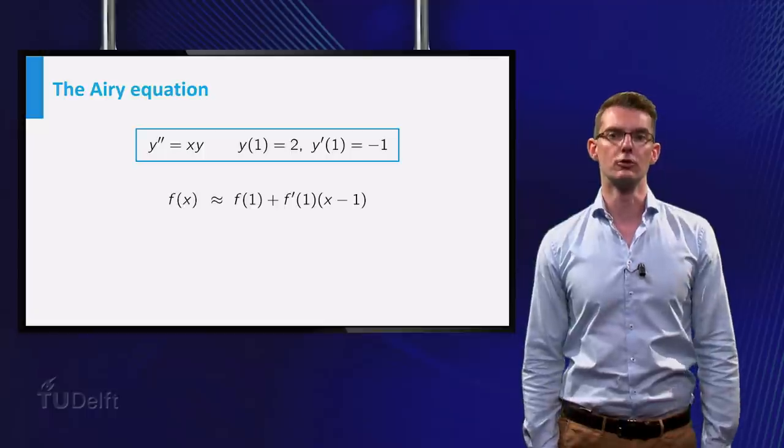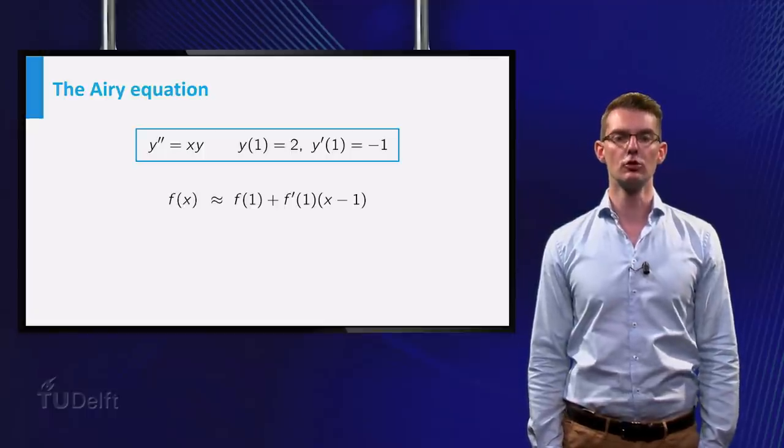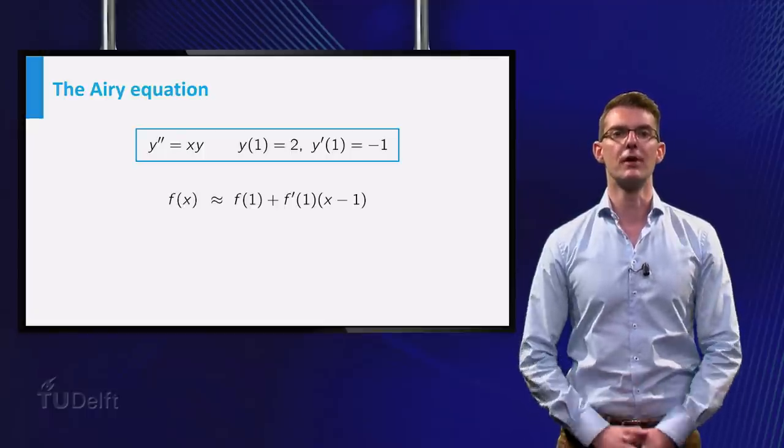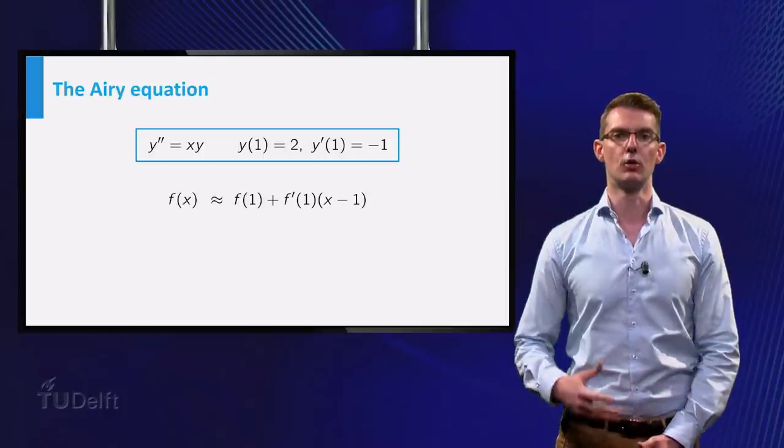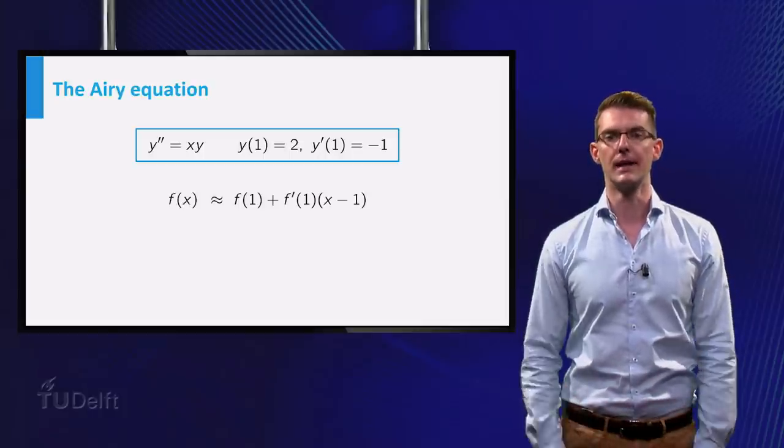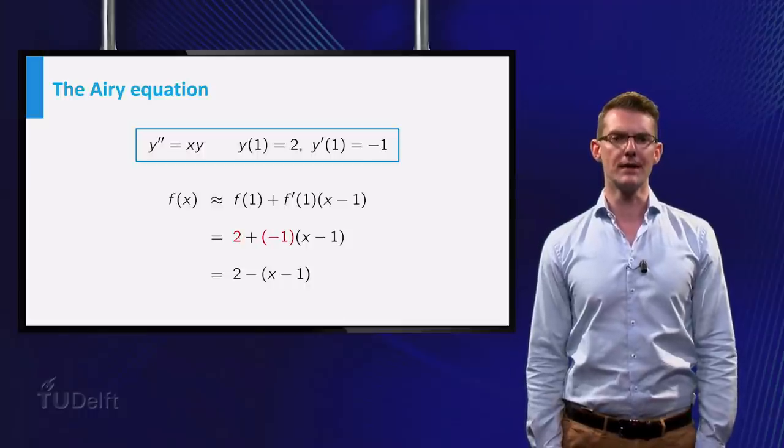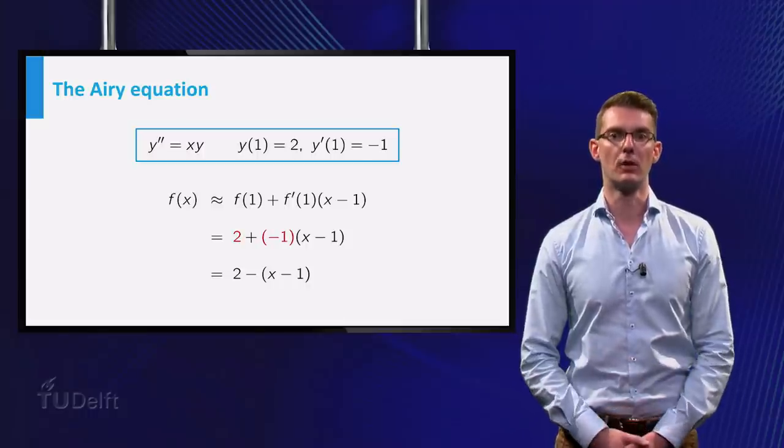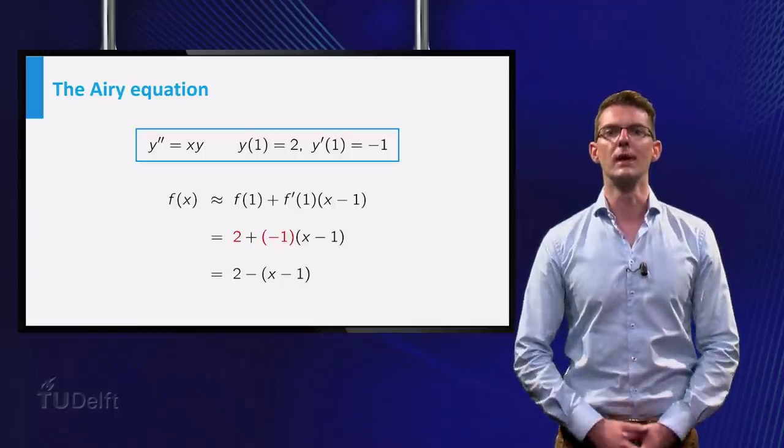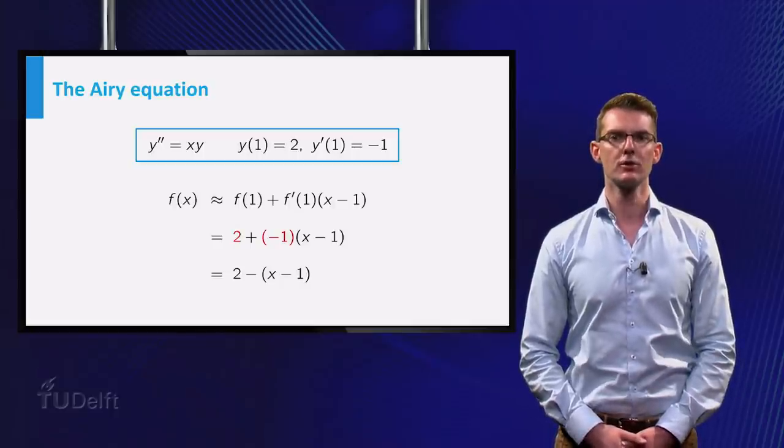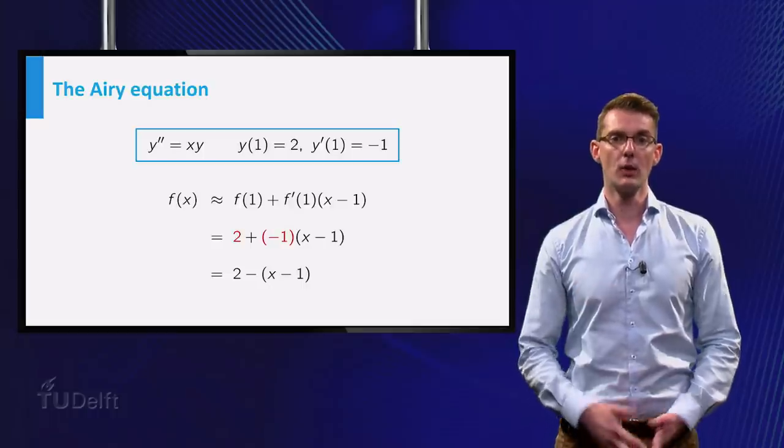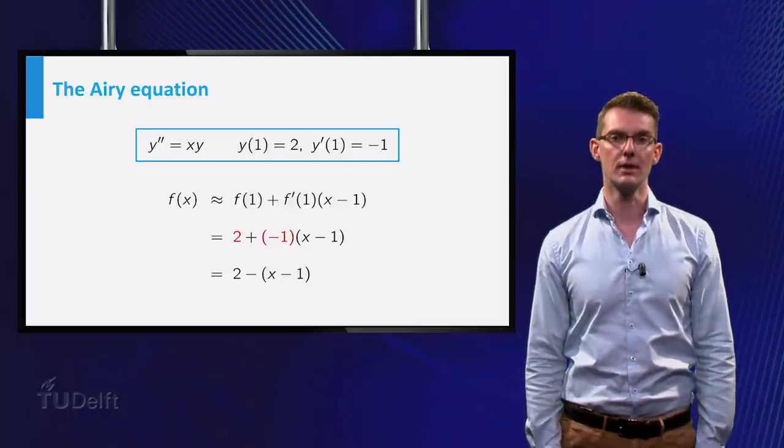The initial values that were given tell us that the solution that we are looking for must have the value 2 in x is 1 and its derivative must be minus 1 in x is 1. This means that if we simply replace f of 1 and f prime of 1 respectively by 2 and minus 1, we get a Taylor approximation of f of x of degree 1. We didn't even have to use the differential equation itself.